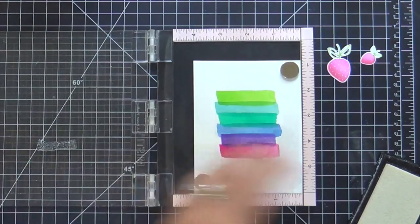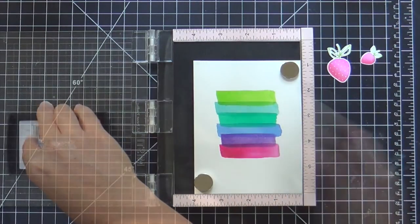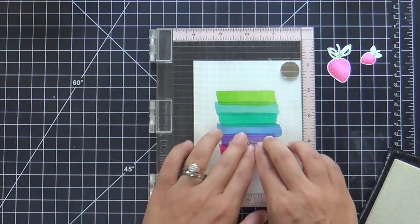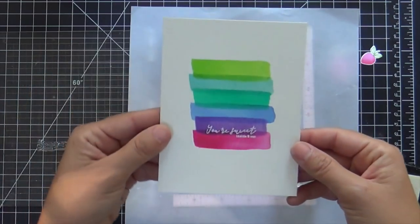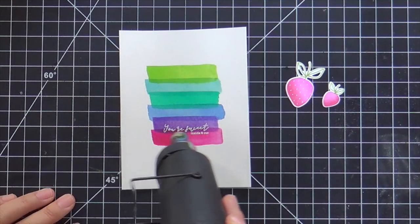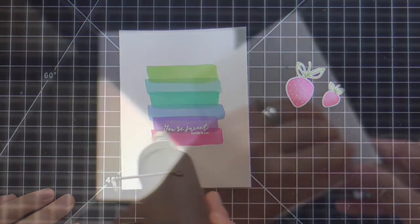And then now for the sentiment, I'm going to emboss the sentiment from the Fruitastic stamp set. So I rubbed down those watercolor stripes with the magic powder bag. It's got to be bone dry if you want to emboss on it. Then I'll heat that with a heat gun.